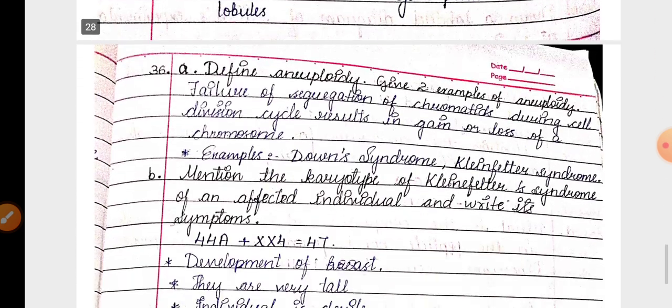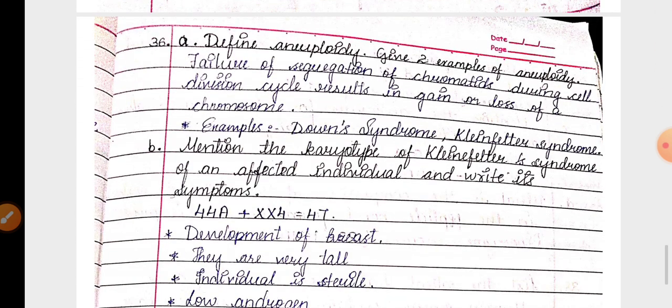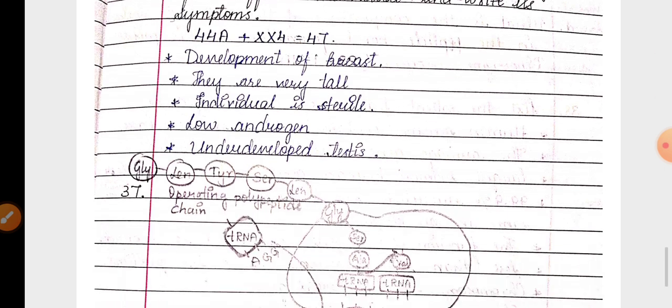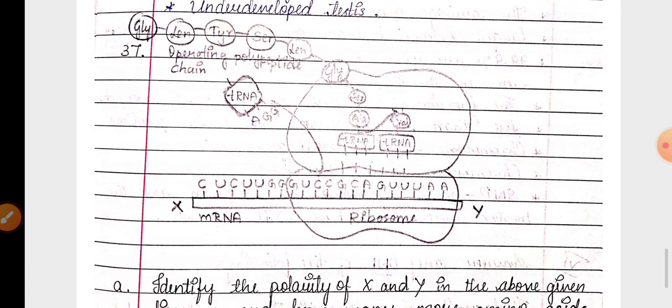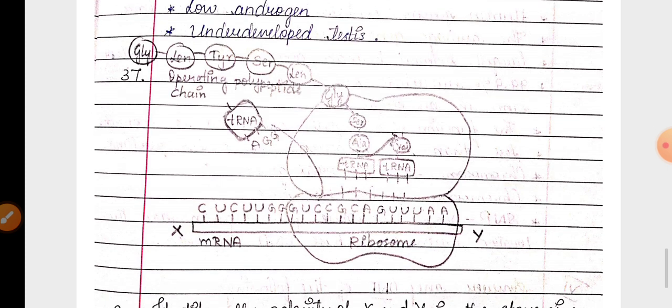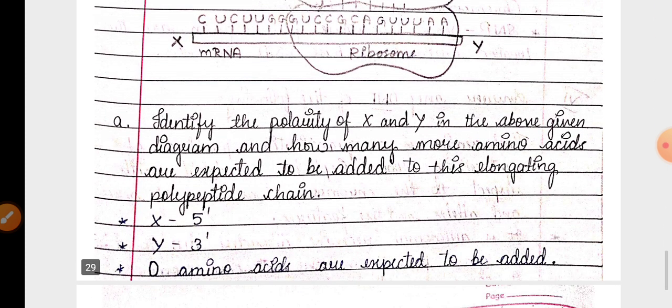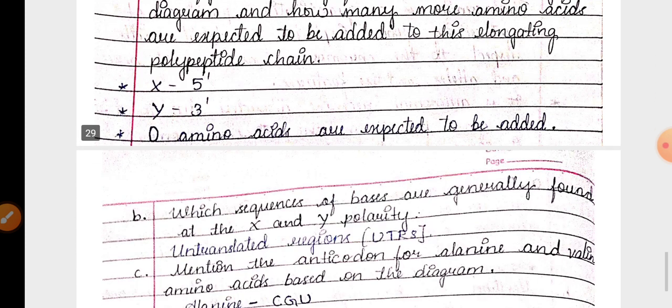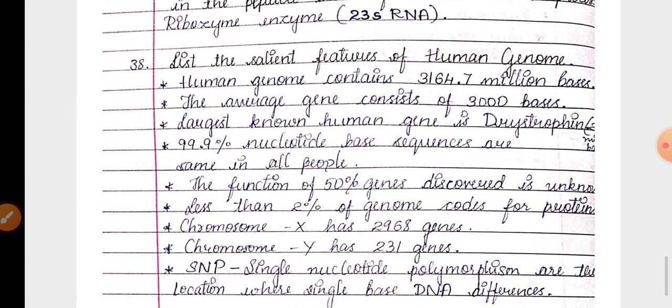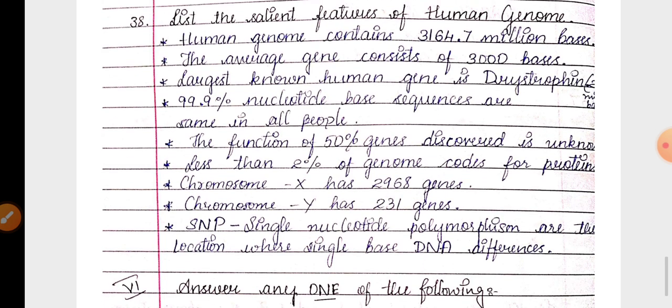Then in part D, for five marks, human male reproductive system diagram. Then question about aneuploidy and examples. Then about Klinefelter syndrome explanation. The next question is the translation unit diagram they have given. You need to identify X and Y and related some sub-questions are there that you have to solve. Then 38th question regarding the salient features of human genome project.